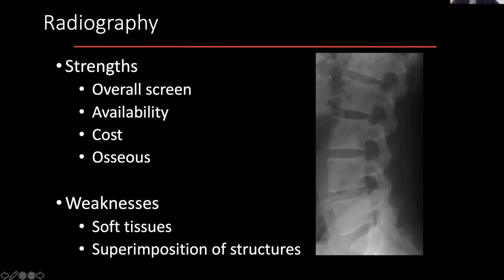We can also perform dynamic maneuvers using radiography — we can perform those with CT as well, but that incurs a much higher radiation cost. Dynamic maneuvers often contribute significantly to evaluation. In the spine context, for example, they're useful for assessing instability.